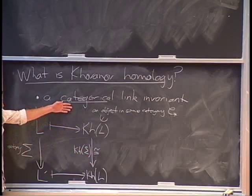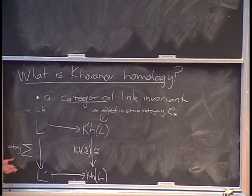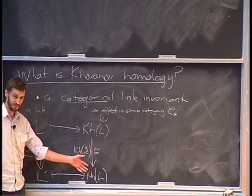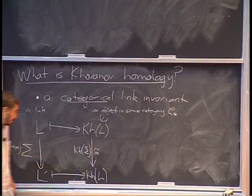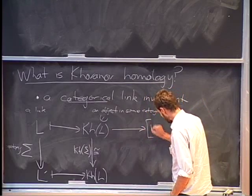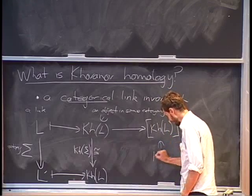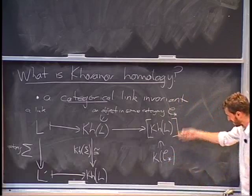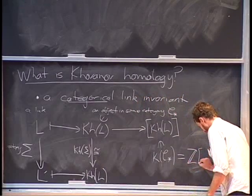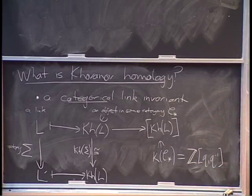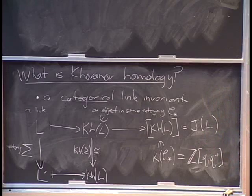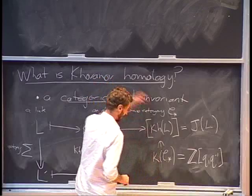Not only do I get objects in this category for both L and L prime, but I get an isomorphism in this category C star associated to the isotopy. In fact, that's what I would want to mean by a categorical link invariant, but for Khovanov homology you actually get a lot more. Not just isotopies between links give us maps in the category — an arbitrary cobordism between links will give us some map, not necessarily an isomorphism, over in the category.